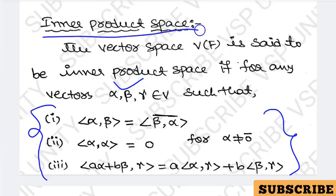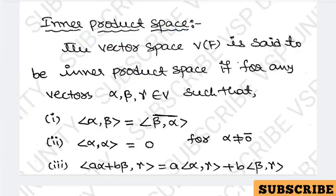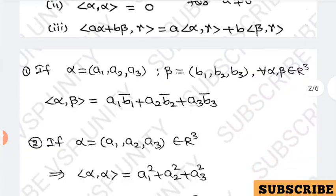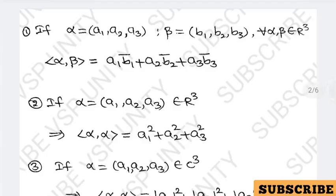If these three conditions are satisfied for any three vectors, then the vector space is called an inner product space. This is the definition of inner product space. We still have some more definitions — I have explained all the basic definitions needed for Unit 4 in this video.